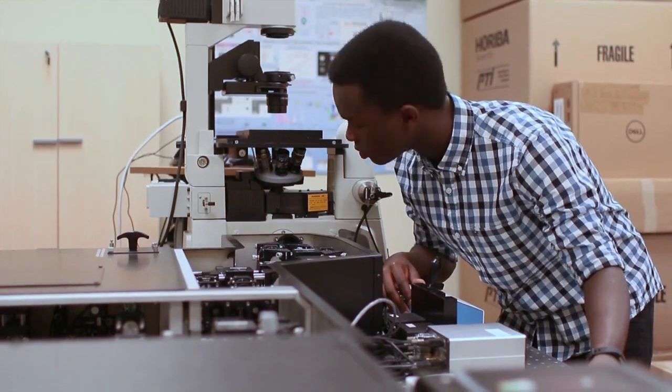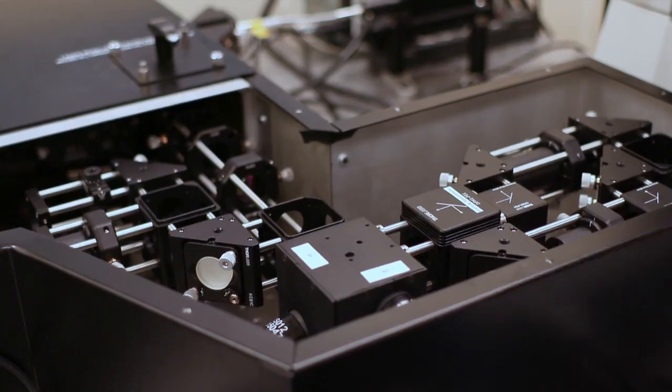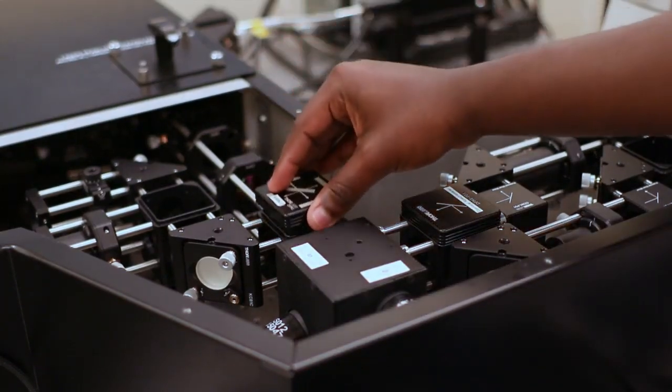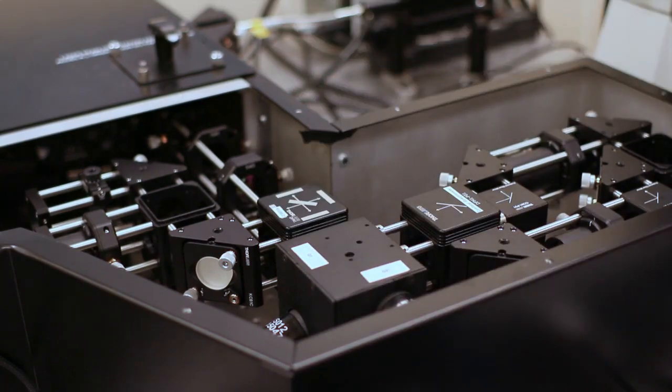Looking along the optical path toward the detector, place the visible optical cube containing the dichroic mirror and filters for directing the visible emission to the detection path in its position.